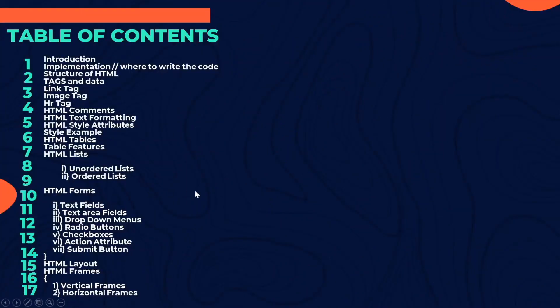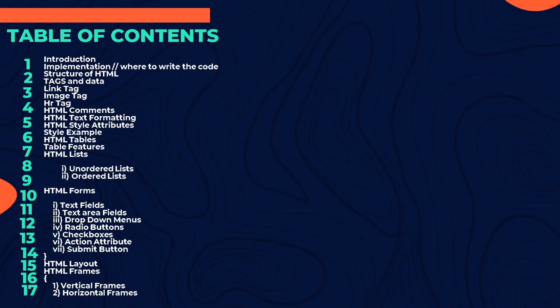I've split the topics into 17 parts so you can understand them one at a time. We'll cover introduction, implementation, where to write code, HTML tag structure, link tag, image tag, HR tag, HTML comments, text formatting, style attributes, tables, lists (unordered and ordered), forms (text fields, textarea, dropdowns, radio buttons, checkboxes, submit button), HTML layout, and HTML frames (vertical and horizontal).